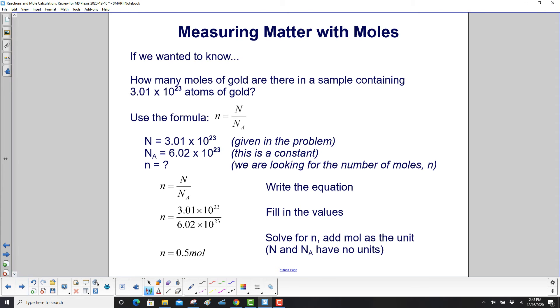If we wanted to know how many moles of gold there are in a sample containing 3.01 × 10^23 atoms of gold, use the formula where capital N is 3.01 × 10^23. That's the number of atoms, and that's given in the problem. N_A is Avogadro's number. It's a constant, 6.02 × 10^23.